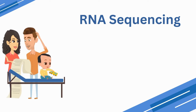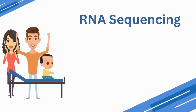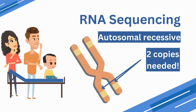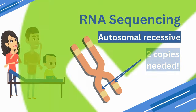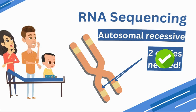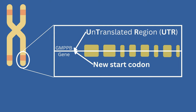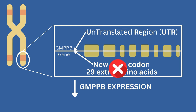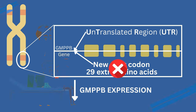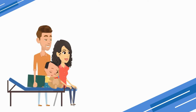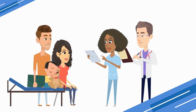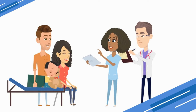RNA sequencing was able to provide answers to Bob and his family by identifying a variant on the second copy of the GMPPB gene. This discovery means that two copies of the gene are faulty, fulfilling the recessive nature of congenital muscular dystrophy. The variant was found in the untranslated region, or UTR, of the gene GMPPB. It created a new start codon upstream of the original start site, which was predicted to result in a protein with 29 extra amino acids. However, the mRNA was recognized as abnormal and degraded before the protein would be created, resulting in lowered expression of the GMPPB transcript. RNA sequencing results were extremely helpful to Bob and his family, and now Bob can be adequately treated and the family can be appropriately counseled.